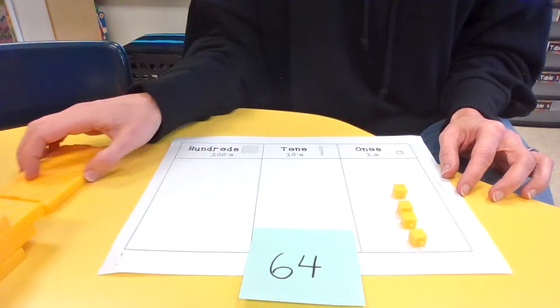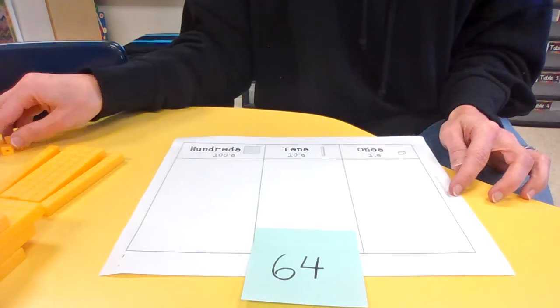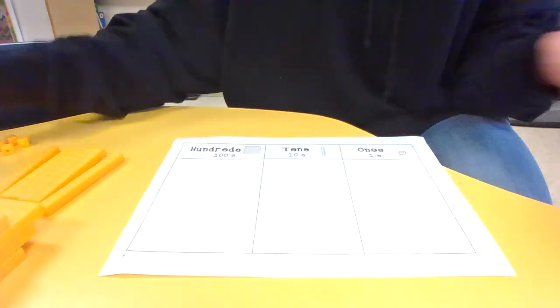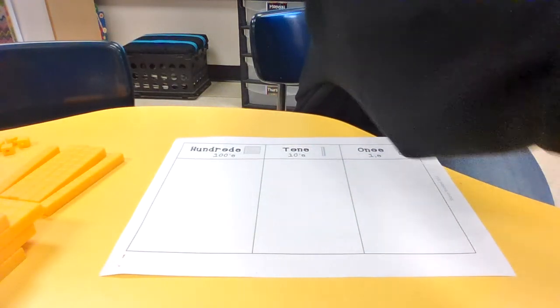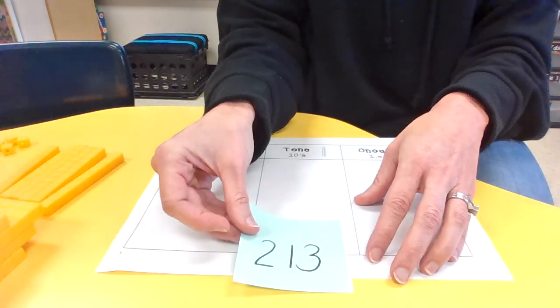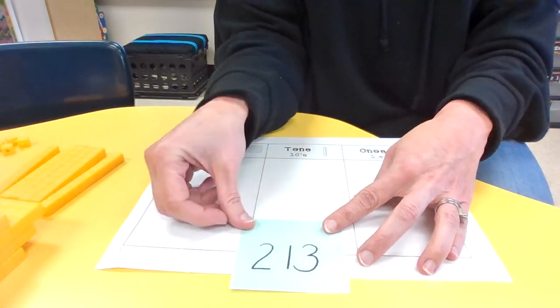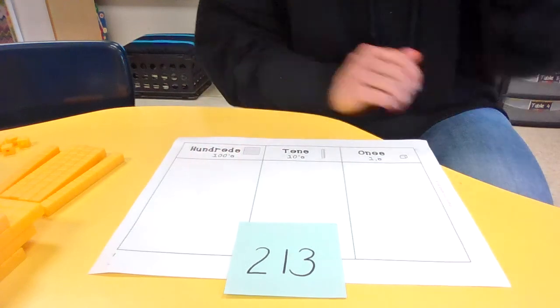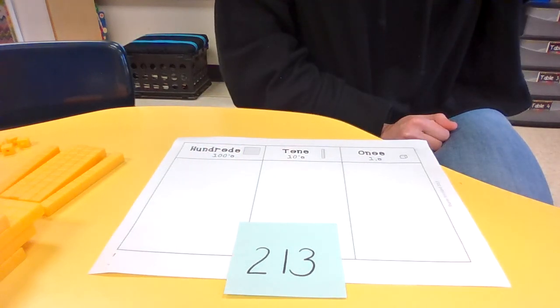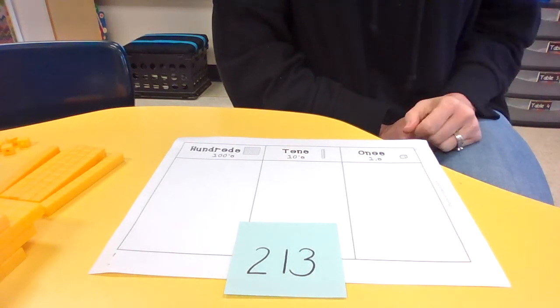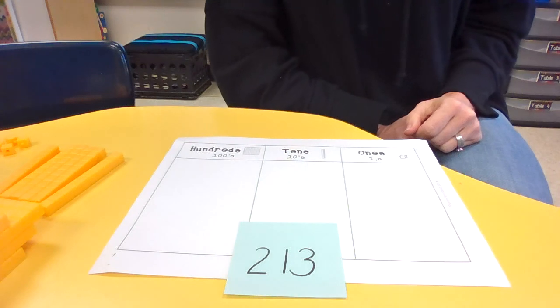Go ahead and clear that for me. We're going to do one more practice. Your number is 213. Start building that for me.